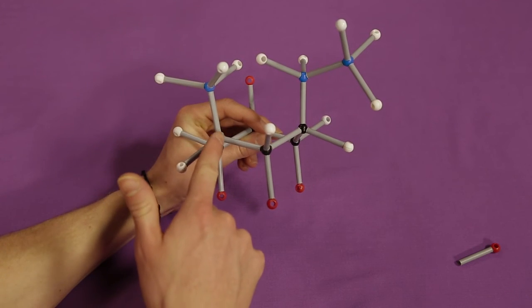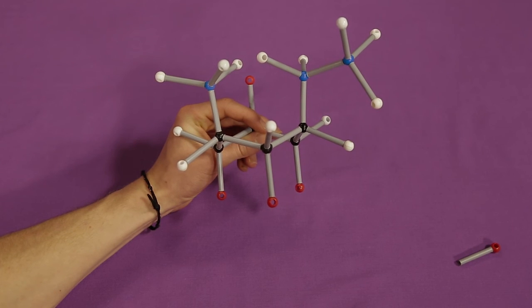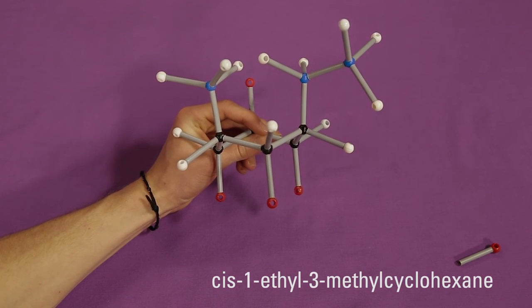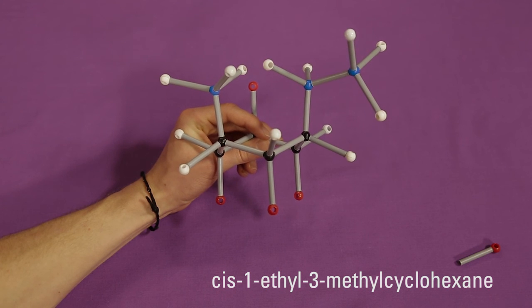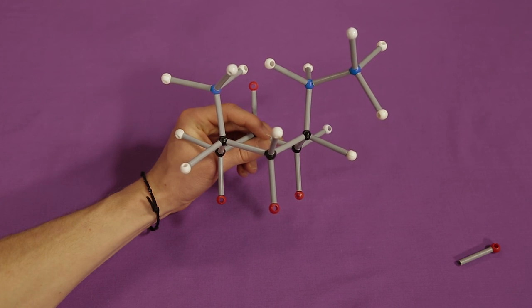Does this represent a cis or trans isomer? Here, both atoms point upward. Hence, we have a cis isomer, cis-1-ethyl-3-methylcyclohexane. When determining cis and trans isomerism, if you build a model, you can easily distinguish between the two.